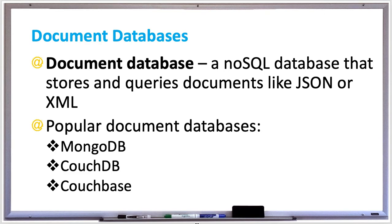CouchDB was initially created for offline mobile device support. There's also CouchBase, which is open source and derived from CouchDB, a document database, and Membase, which is a key-value database. So it's the best of both worlds, and therefore CouchBase supports both document and key-value models. CouchBase can be configured to both eventual and strict consistency.